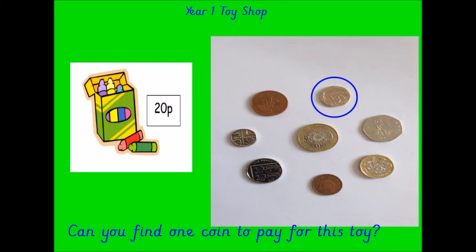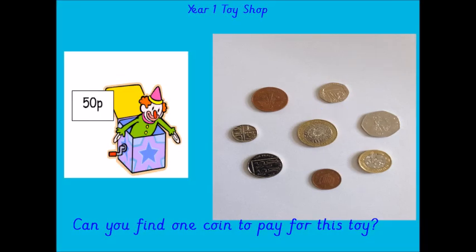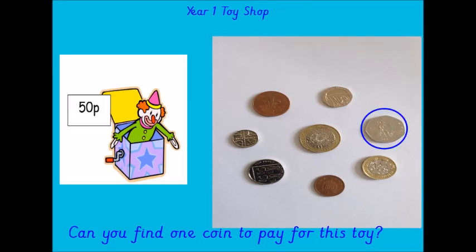How did you do? And lastly, the jack in the box — that was 50p, so you needed a 50p coin. I really hope you enjoyed learning about the different coins we use in our country. It would be a great idea if you could play shops at home, maybe borrowing some money from a grown-up to look at, or money from your own money box. Have fun. See you again soon. Bye-bye.